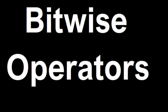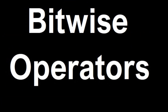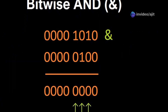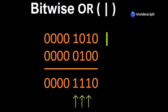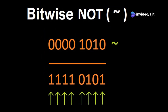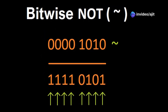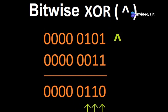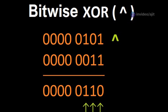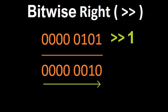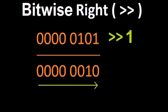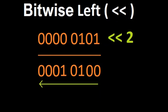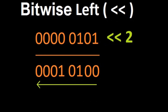And don't forget bitwise operators. Bitwise AND sets the bits if both are one. Bitwise OR sets the bits if either is one. Bitwise NOT inverts each bit value. Bitwise XOR sets bits if different. Bitwise right shifts the bits rightward. Bitwise left shifts the bits leftward.